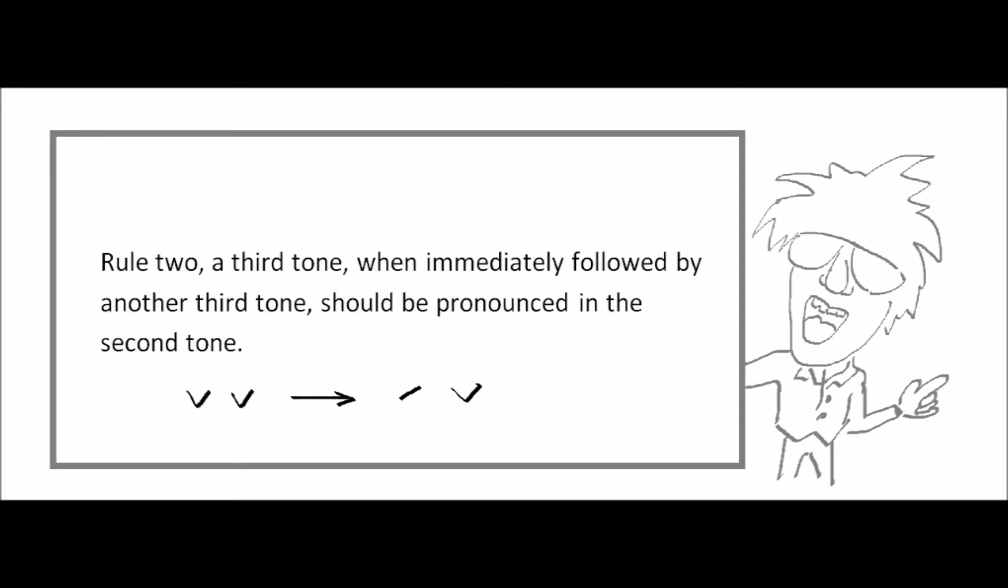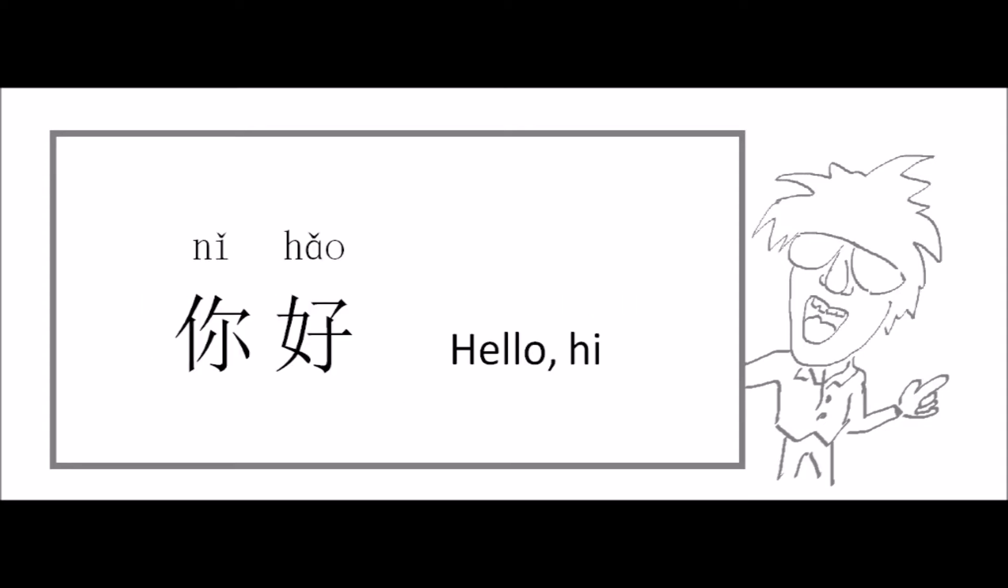Let's see rule 2 about the third tone. A third tone, when immediately followed by another third tone, should be pronounced in the second tone. Let's see this phrase. The two characters in this phrase both have the third tone. So do we say hello and hi like this? 你好. Here, the rule 2 will be applied.